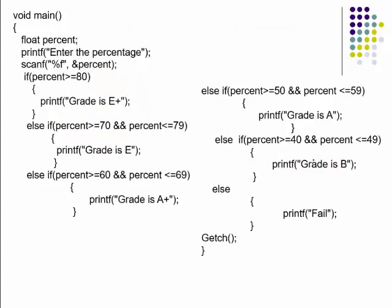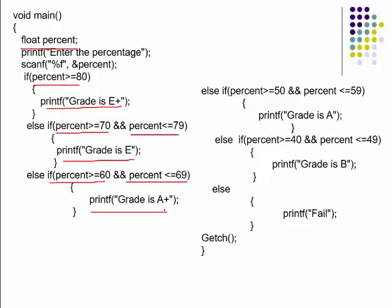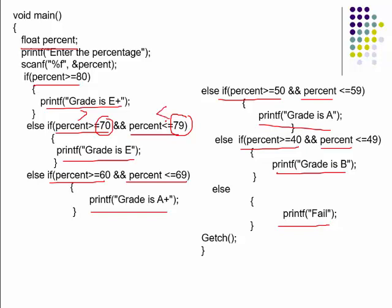In the program: declare float percentage and read its value. If percentage >= 80, printf 'Grade is E+'. Else if percentage >= 70 and <= 79, printf 'Grade is E'. Else if >= 60 and <= 69, printf 'Grade is A+'. Else if >= 50 and <= 59, printf 'Grade is A'. Else if >= 40 and <= 49, printf 'Grade is B'. Else, printf 'Fail'. For a range, use greater-than with the smaller number and less-than with the larger number.